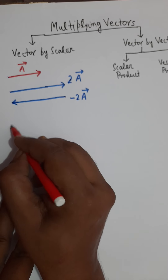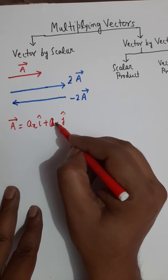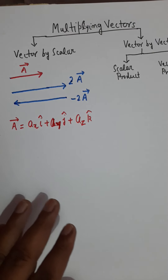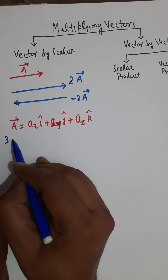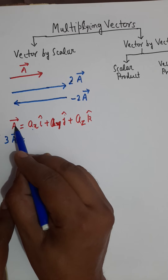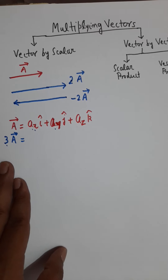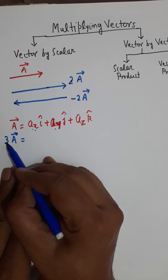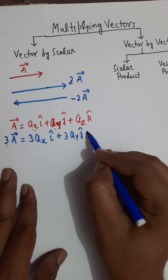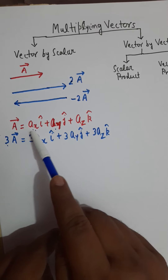In unit vector notation, if vector A is expressed as Ax i cap plus Ay j cap plus Az k cap, and we multiply this vector by 3, then according to the distributive law this number 3 is multiplied with each individual component. So 3 multiplies the x component, the y component, and the z component separately. This is the component form of scalar multiplication.